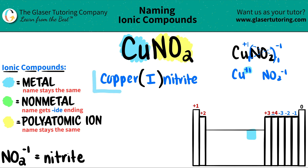So CuNO₂ is copper(I) nitrite. And there you go — that's the name. Hopefully this helped.